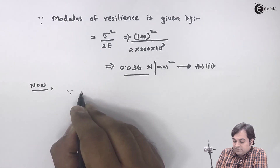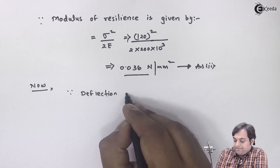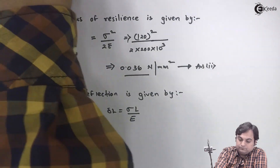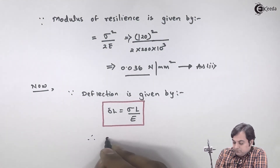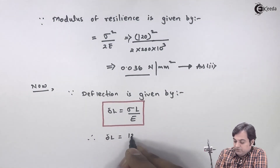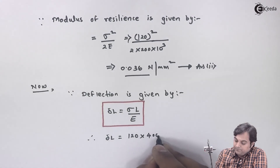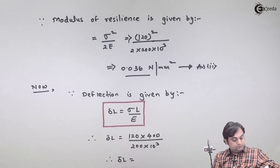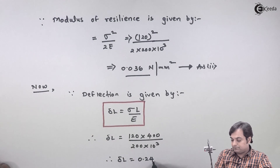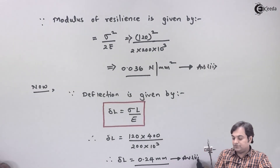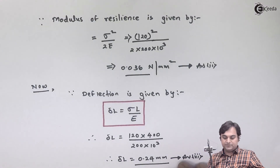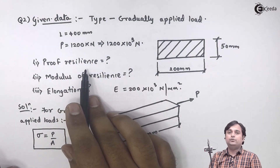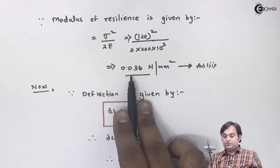The third part is deflection, given by stress × L / E. Therefore, deflection equals 120 × 400 divided by 200 × 10³, giving a deflection value of 0.24 mm. So in summary: proof resilience is 144 Newton meter, modulus of resilience is 0.036 Newton per mm square, and elongation is 0.24 mm.